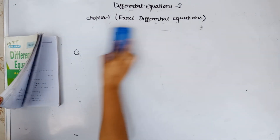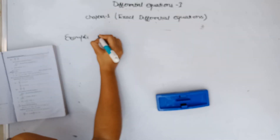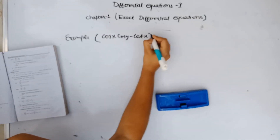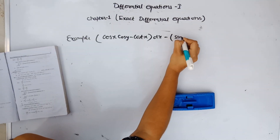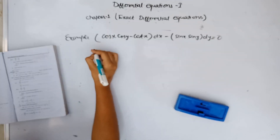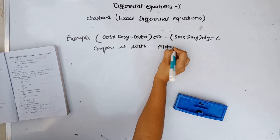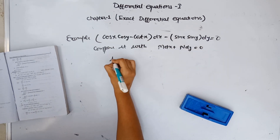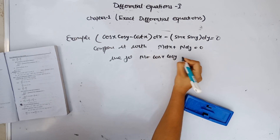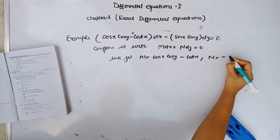For example, let us work through an example. The equation is: cos x cos y minus x squared, dx, minus sin x sin y, dy, equal to 0. The first step is to compare it to M dx plus N dy equal to 0. We get M equal to cos x cos y minus x squared, and N equal to minus 2y minus sin x sin y.